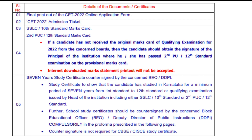This applies to Class A students especially. For the study certificate, the school study certificate covering 1st to 10th must have the BEO's signature, and the PUC certificate must have the DDPI's signature. Both BEO and DDPI countersigning is compulsory on the study certificate.